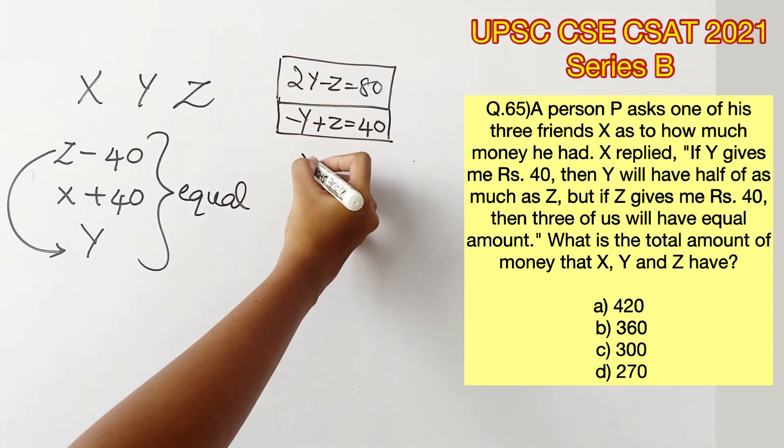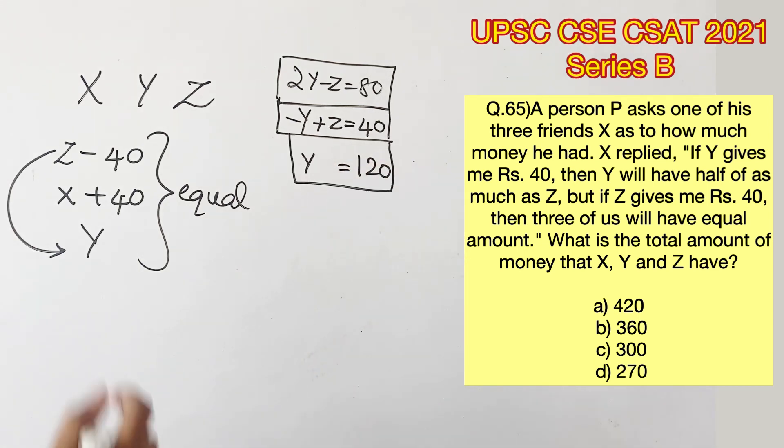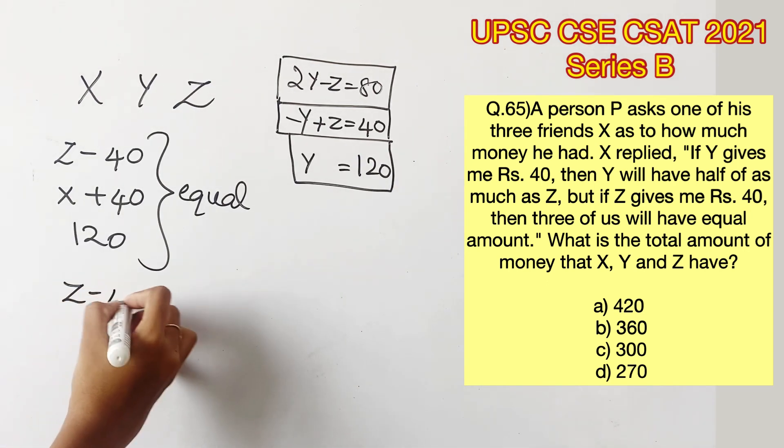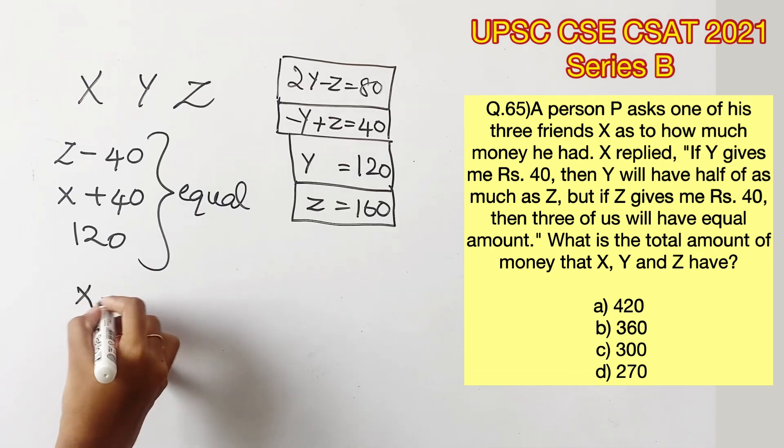Now we can solve these two equations. We get Y equals 80 plus 40, that is 120. Now that we have found out the value of Y, we can equate it for X and Z. Equating it for Z, we get Z equals 120 plus 40, that is 160.